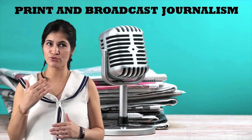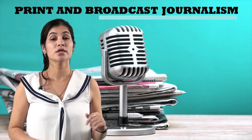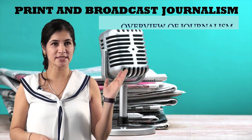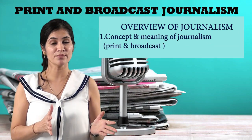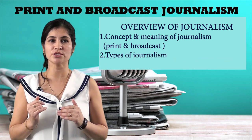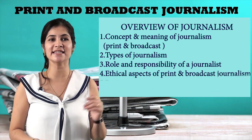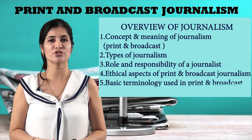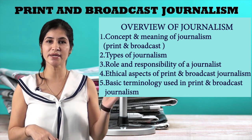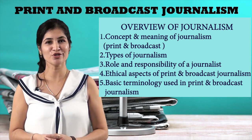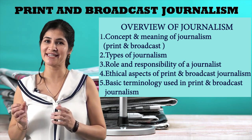The curriculum of the course comprises four units. The first unit will provide an overview of journalism. The topic opens up with the concept, meaning, and importance of print and broadcast journalism, types of journalism, along with the role and responsibilities of the journalist in society. It will also examine the legal provisions and ethical considerations that govern the practice of journalism. Basic terminology used in print and broadcast journalism will also be included, which is helpful for students in understanding the context and specialized tracks.